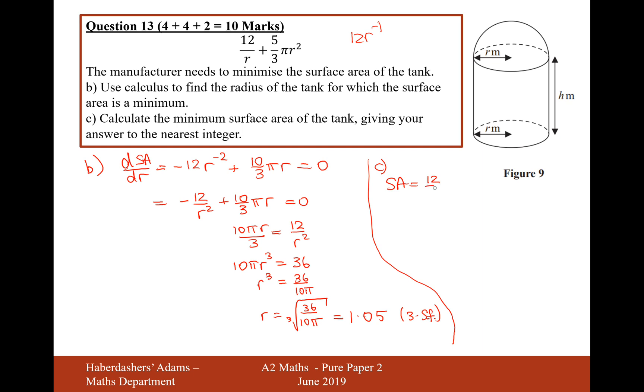it's going to be 12 over answer plus 5 over 3 pi answer squared. Therefore, the surface area is going to be 17 meters squared to the nearest integer.